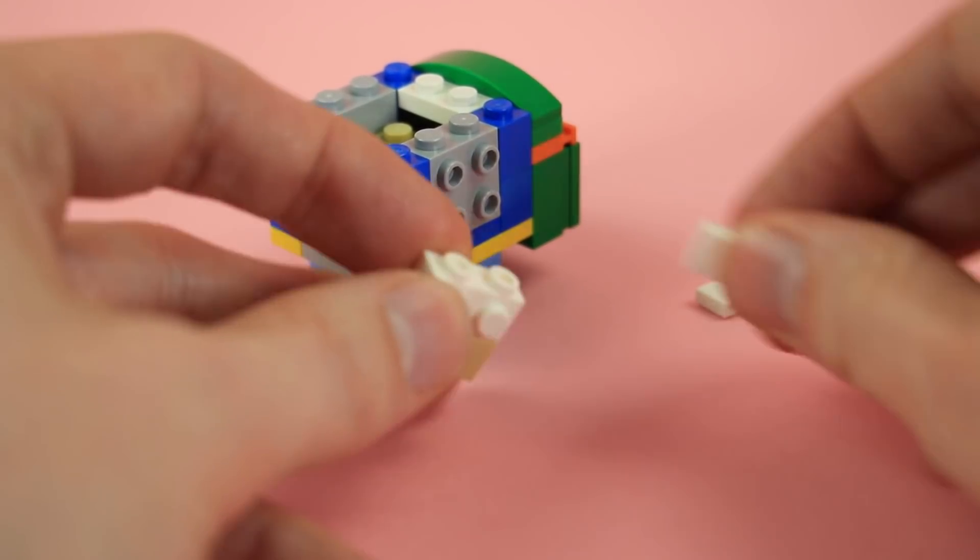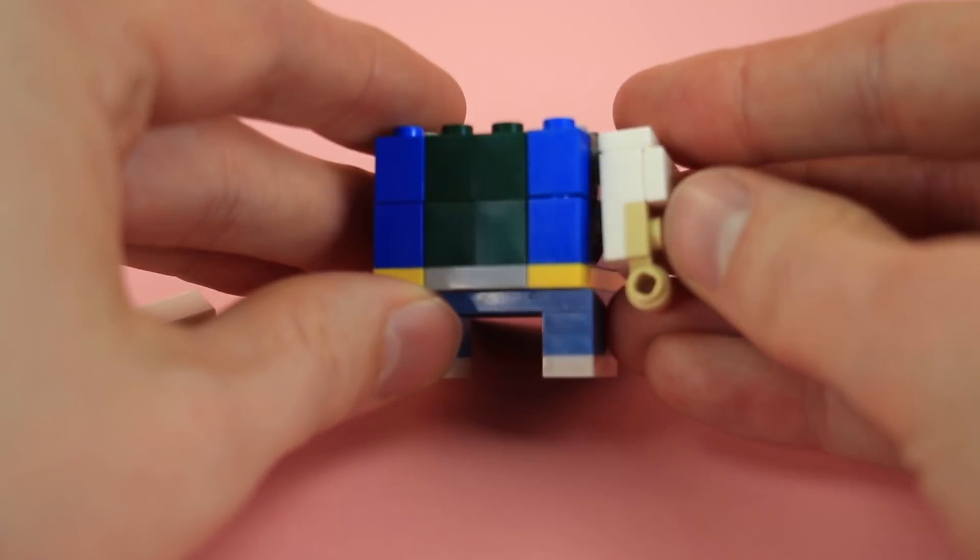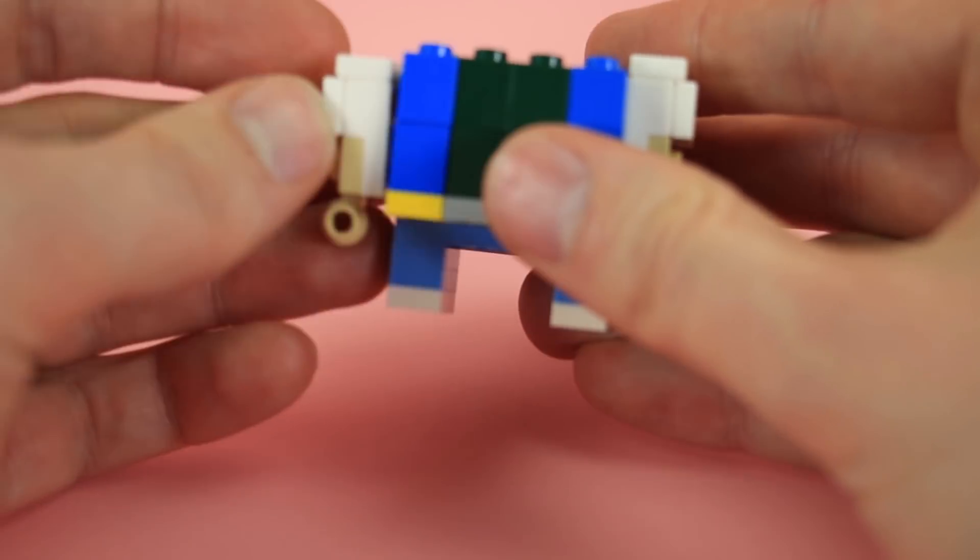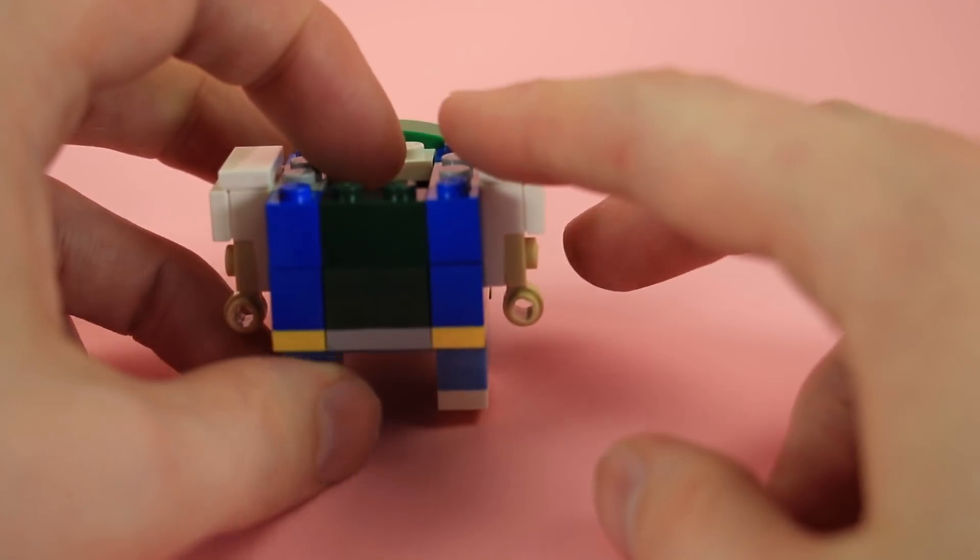And then I like what she did here using 1x2 tiles to just beef out the shoulders a little bit. It definitely gives like that puffy jacket sort of feel there. It's a nice little detail. And you're going to mirror one of them so the hands are both forward.